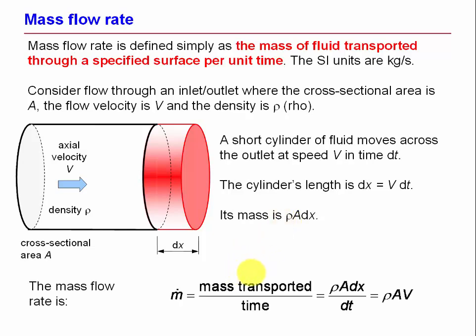The mass of that plug is the volume which is A times dx multiplied by the density ρ. The mass flow rate then is the mass that's transported divided by the time. It's mass per unit time. So it's ρ A dx divided by dt and dx/dt is the velocity. So we get ρ A v and that's a very universal simple equation for mass flow rate.